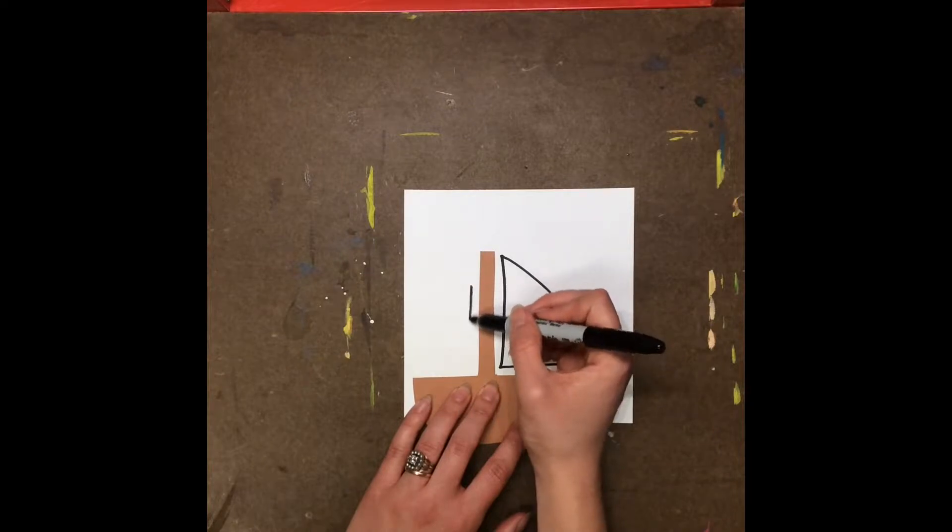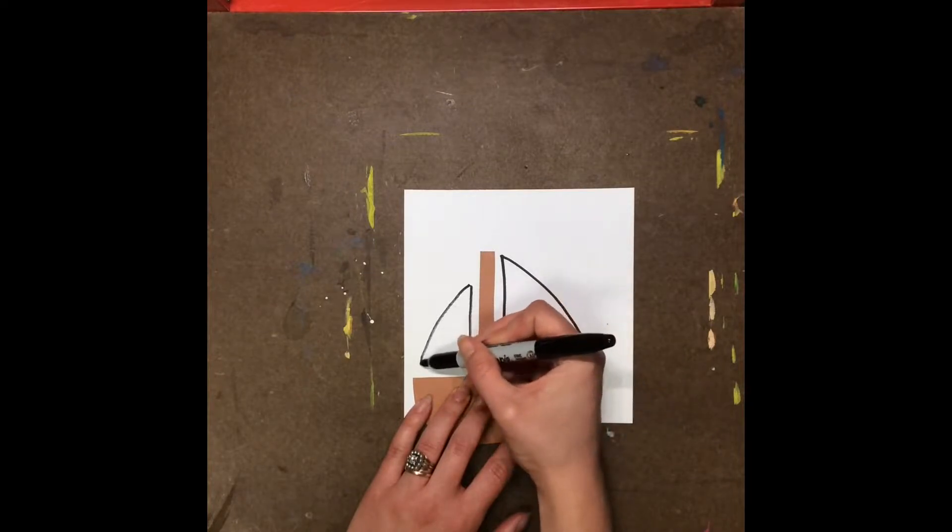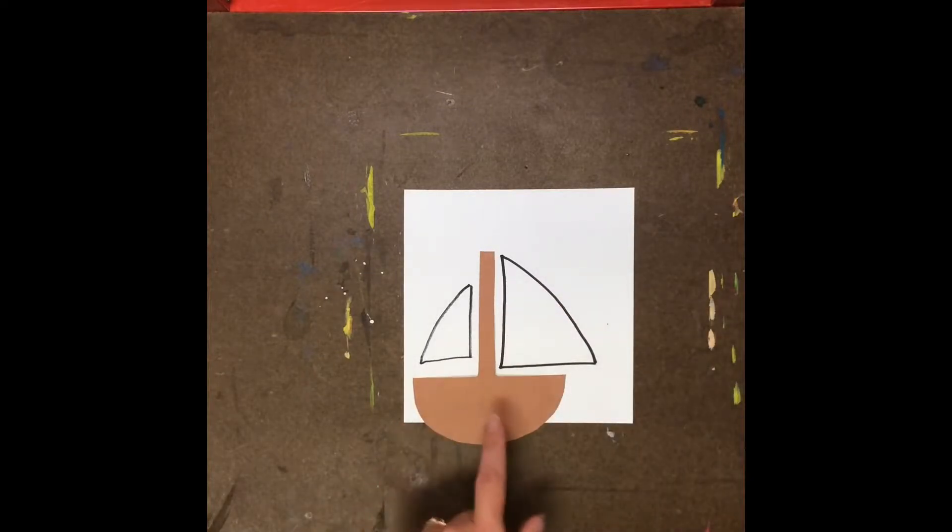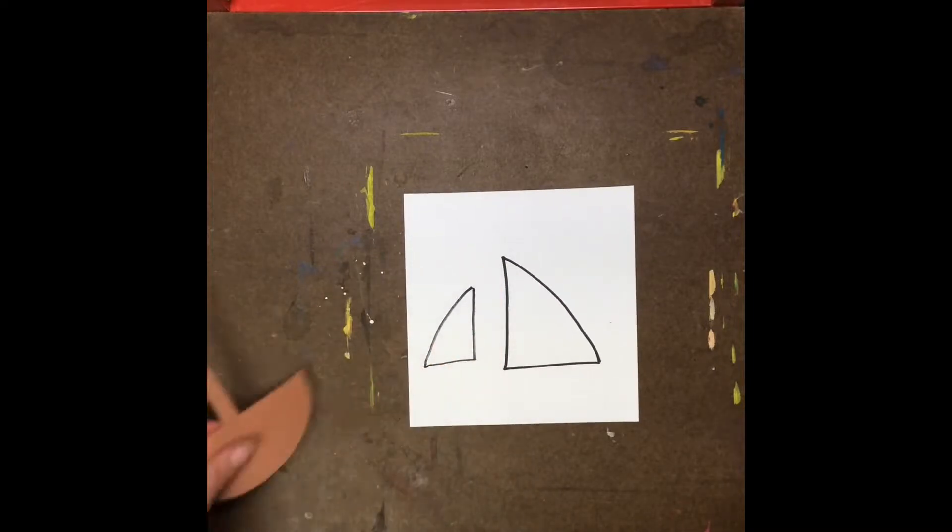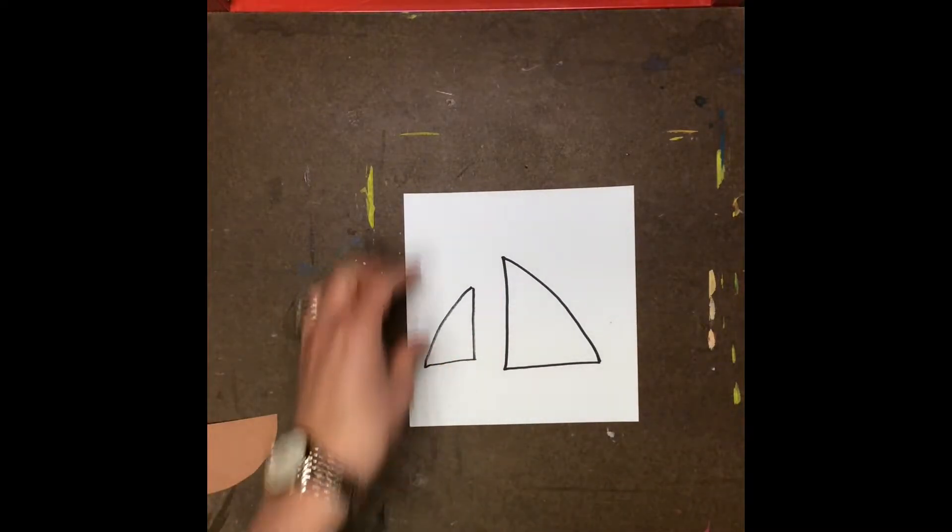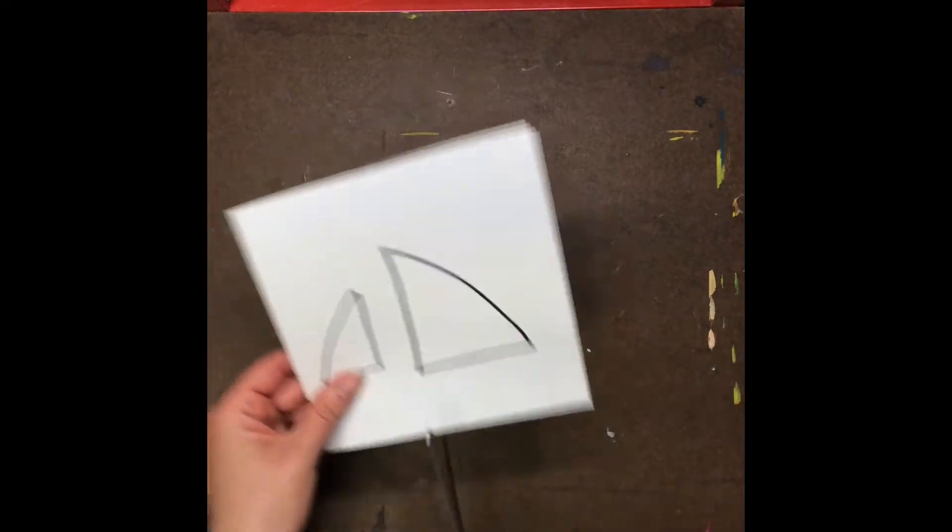I usually do a big triangle and kind of a medium triangle for each sailboat. Since I put my brown boat there I knew exactly how big the sails needed to be. Now I can just cut these out.